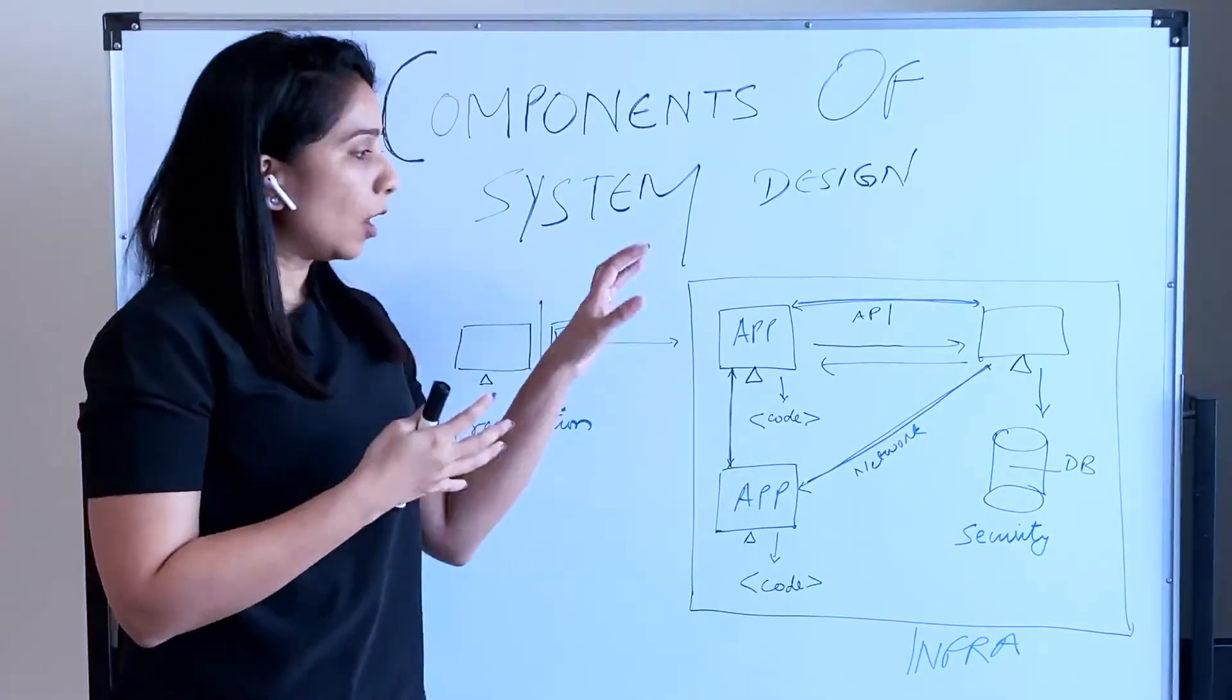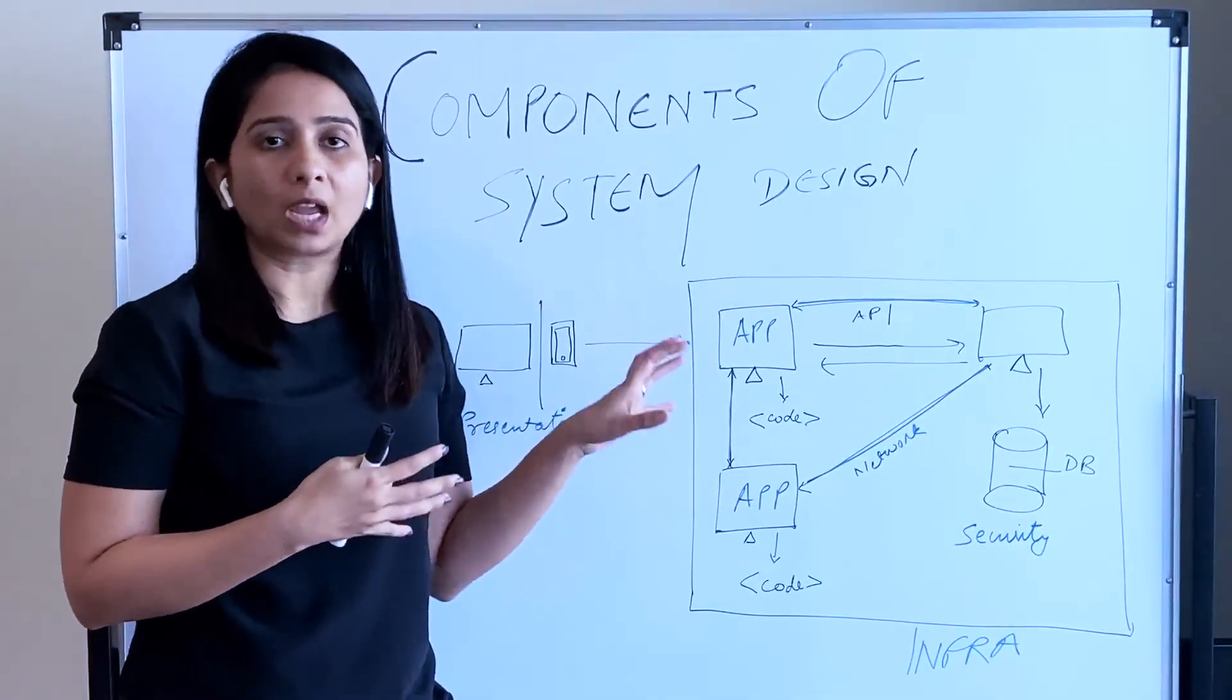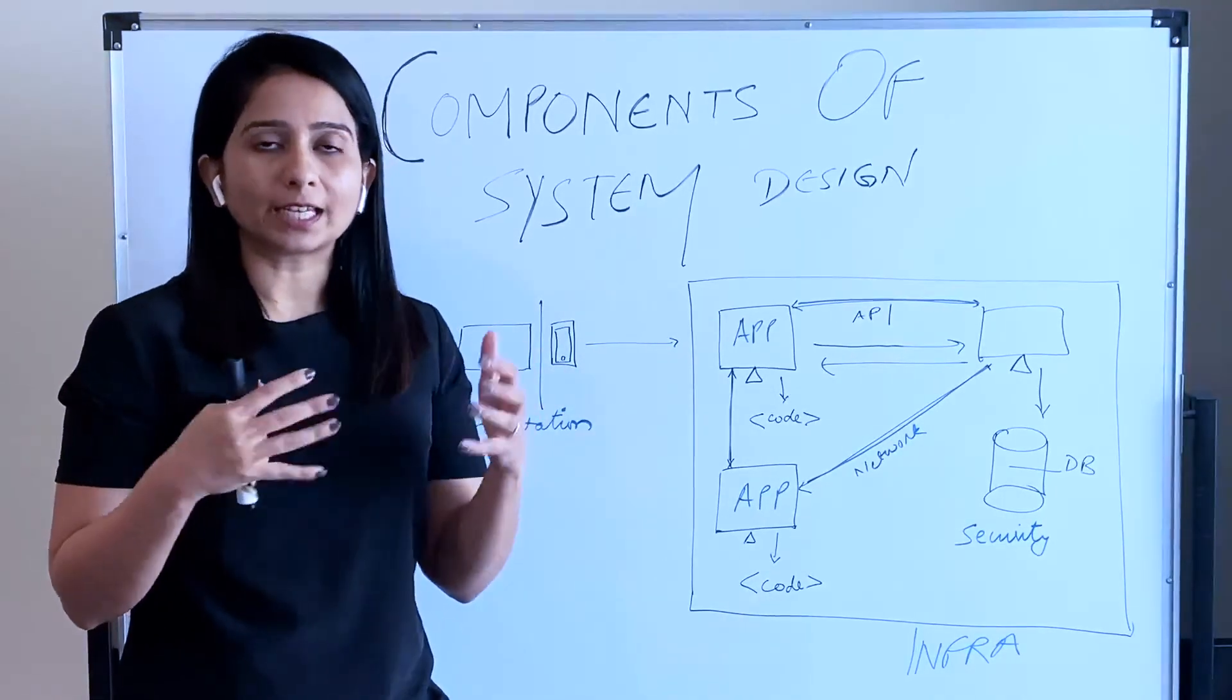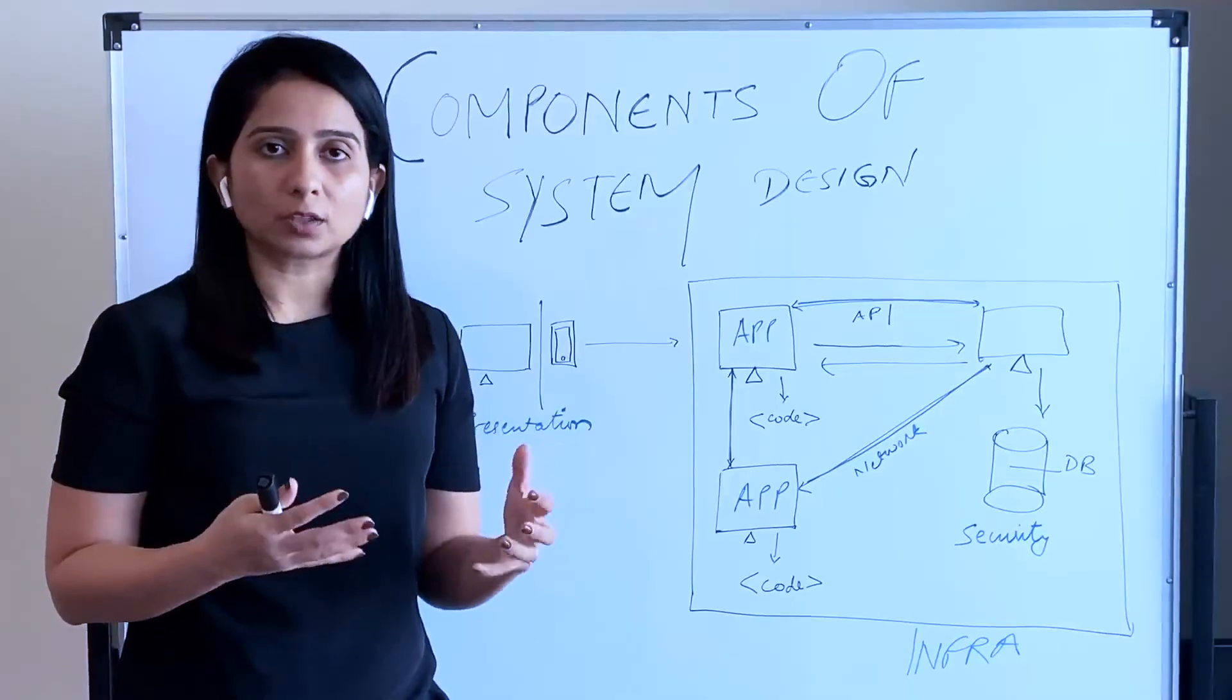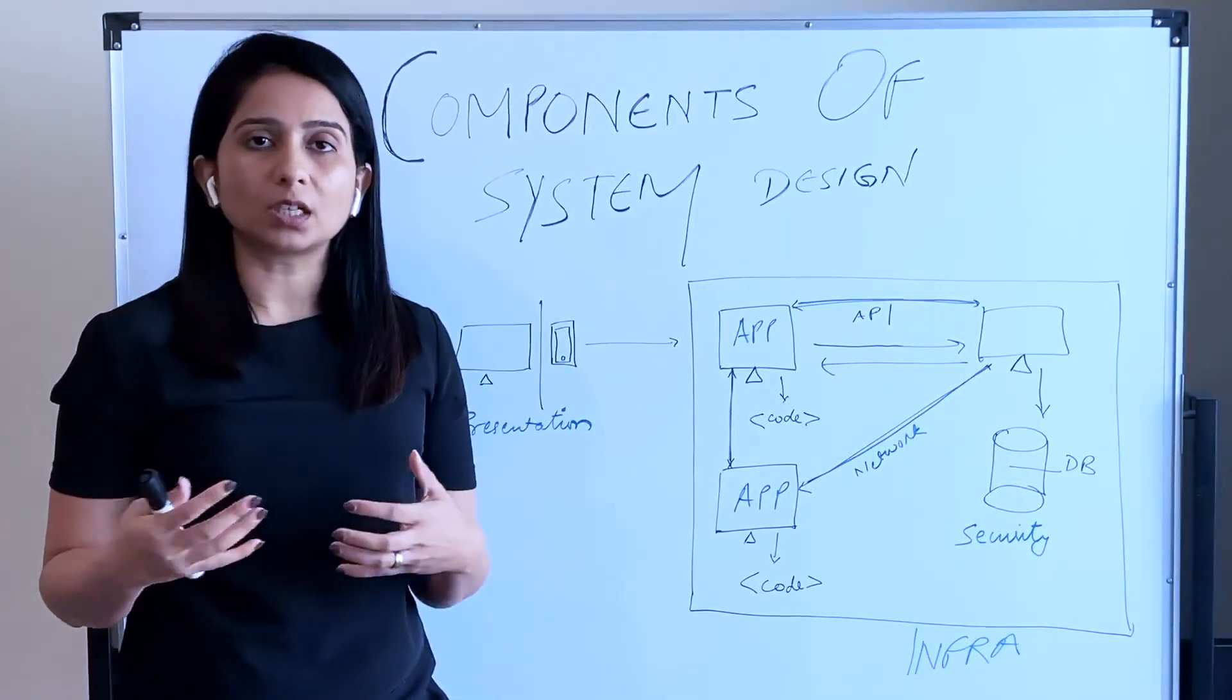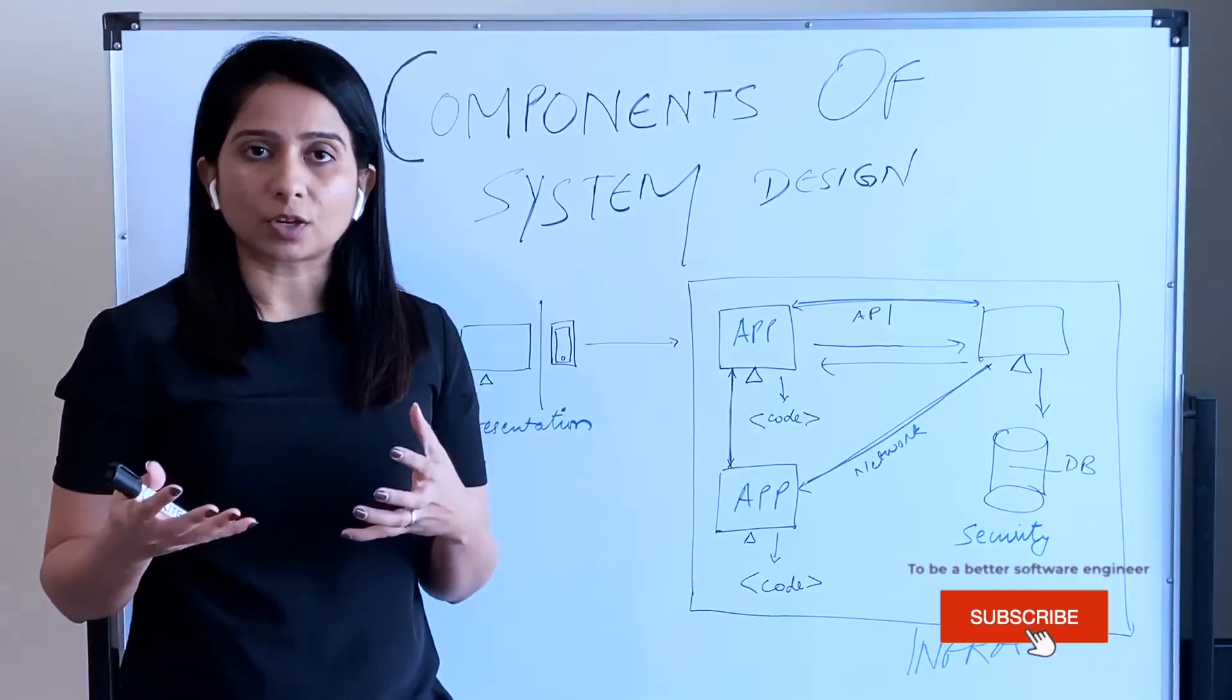Now that we understand how a system overview looks like and the components look like, let's go back to our example of building and explore a bit more. The way a building has walls, floors, terraces, fire escape, exit strategy, electrical supply, etc. Similarly, a system is composed of...